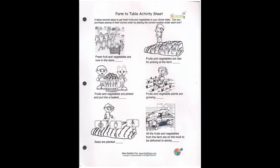The first picture says fresh fruits and vegetables are now in the store. Beside it, fruits and vegetables are ripe for picking at the farm. The second row first one says fruits and vegetables are picked and put into a basket, and beside it, fruits and vegetable plants are growing. The bottom left says seeds are planted, and the last one says all the fruits and vegetables from the farm are on trucks to be delivered to the stores.